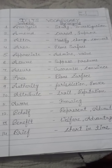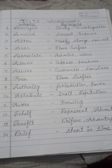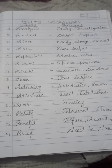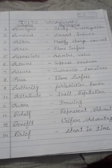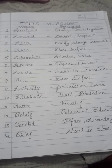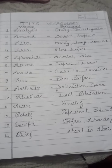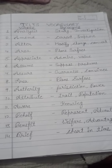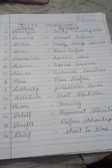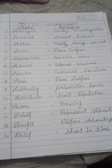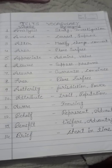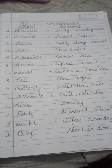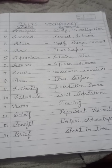Number seven: assure — guarantee and convince. Number eight: area — plane and surface. Number nine: authority — jurisdiction and power. Number ten: attribute — trait and reputation.